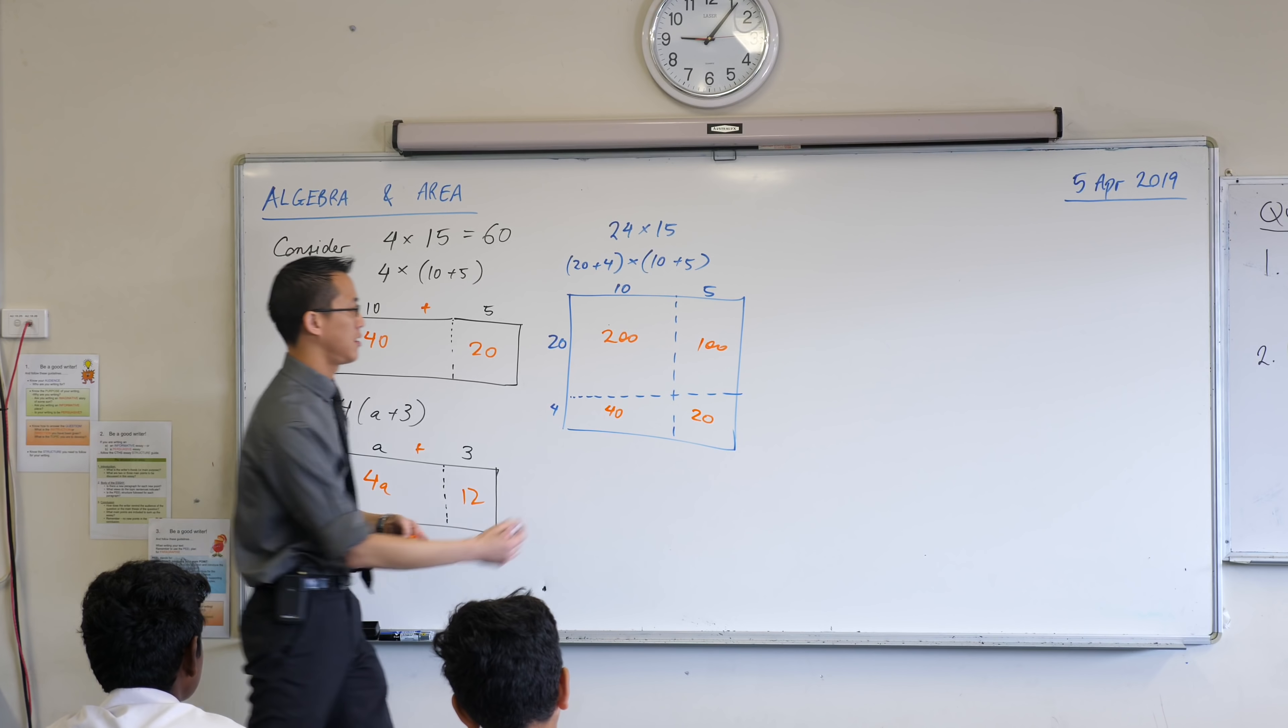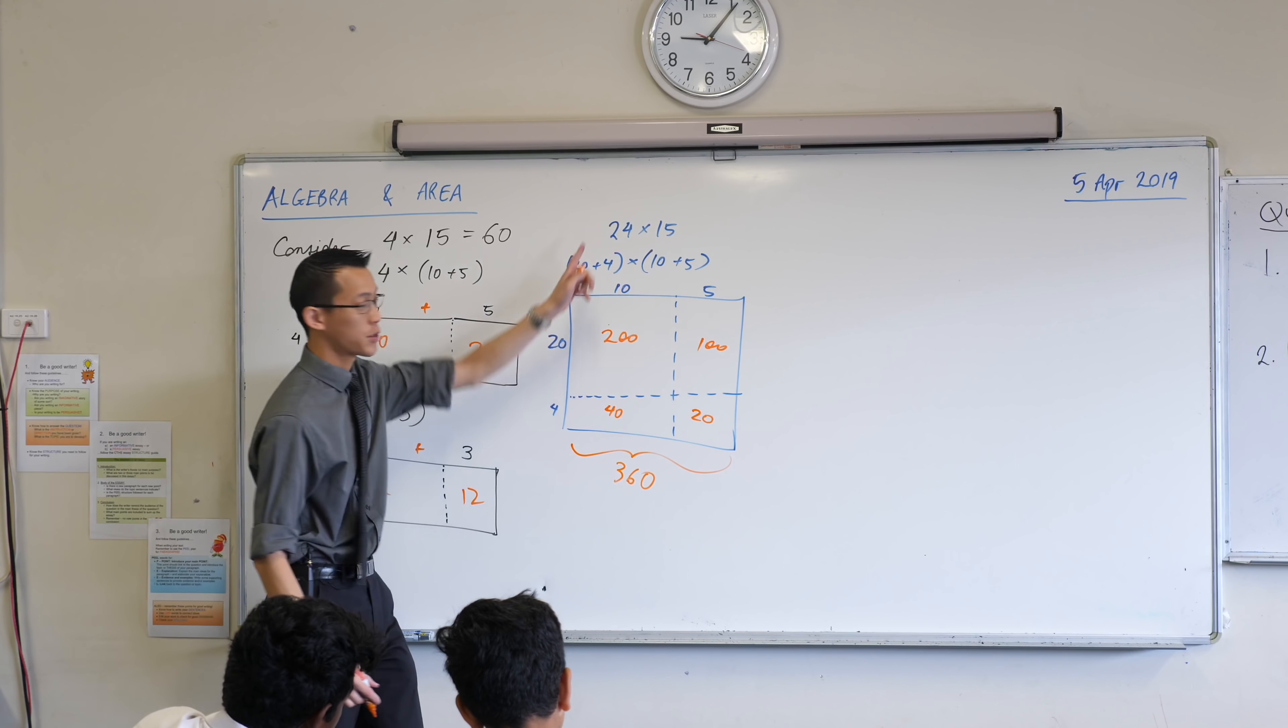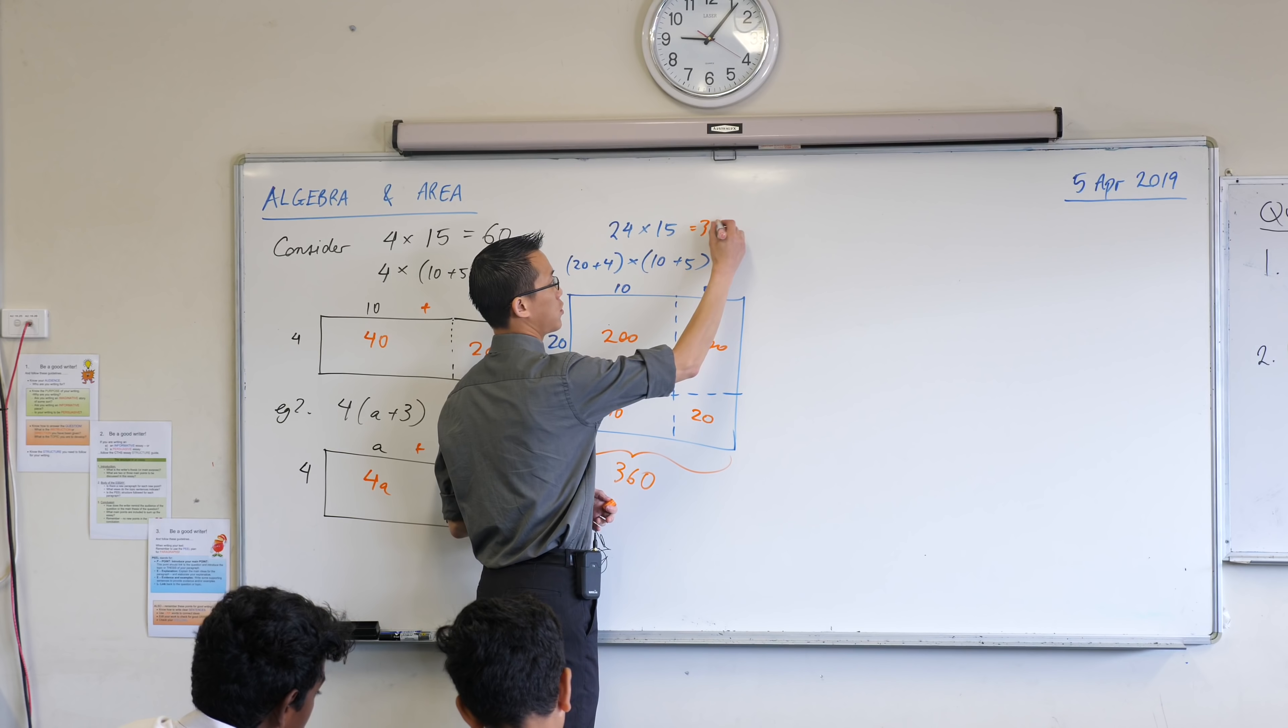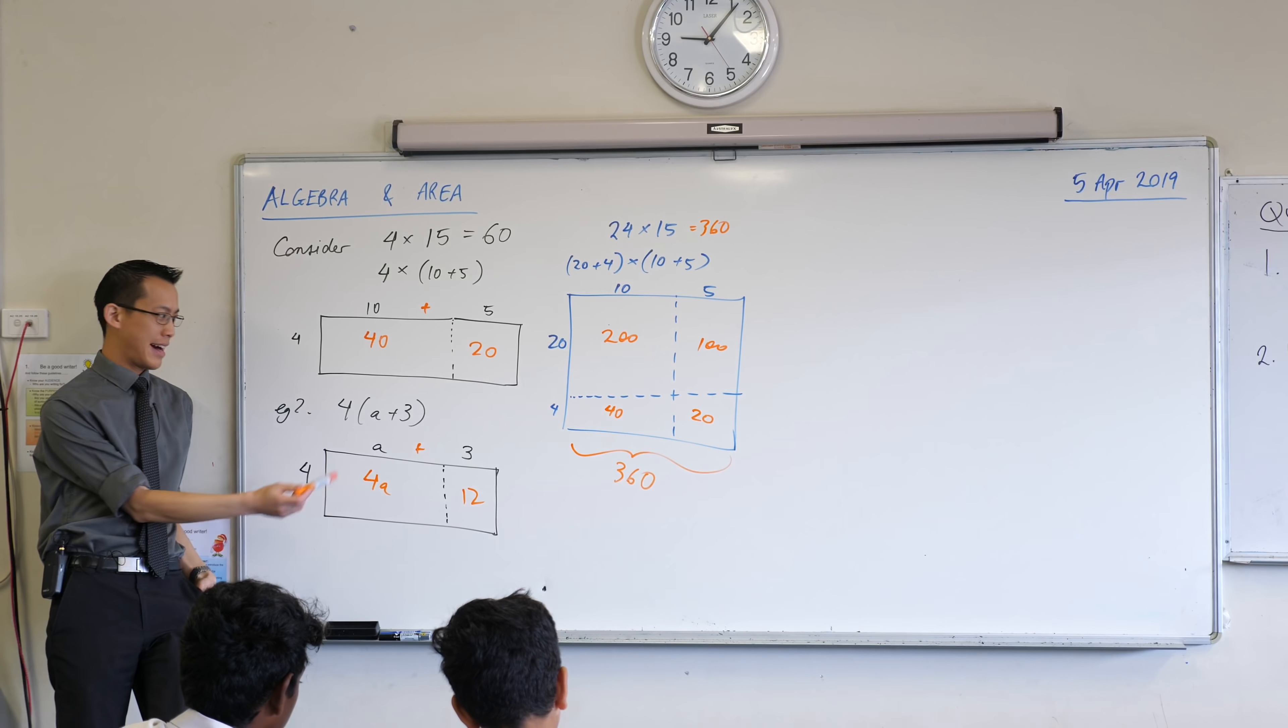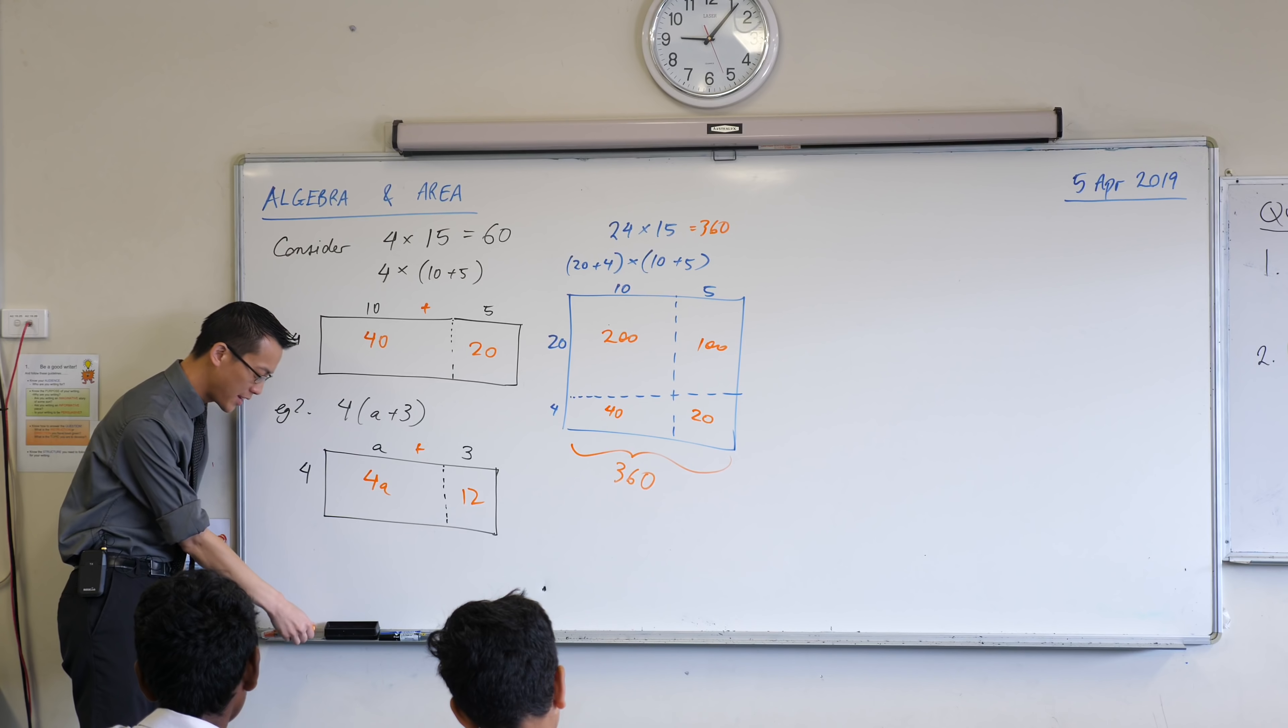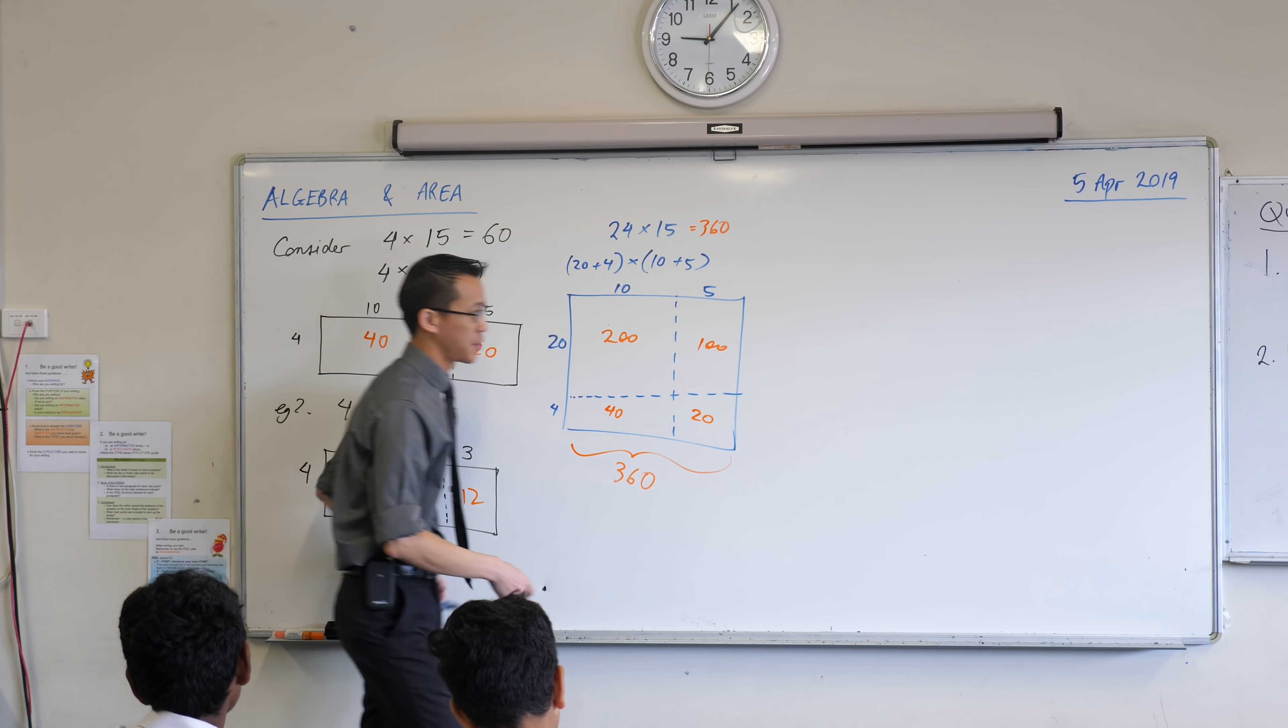Can someone tell me? 360. Very good. So that's what 24 times 15 is equal to. Now I want you to think about what that might look like for something like this if it had not just 4 lots of a plus 3. Here's where we're going.